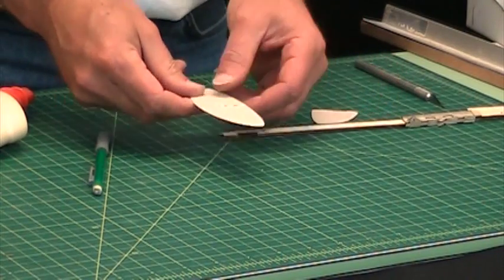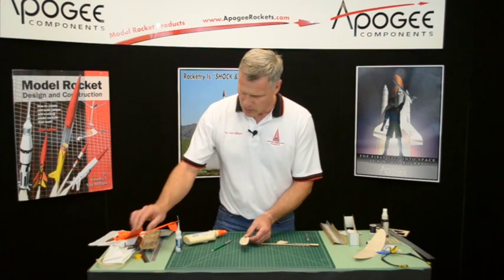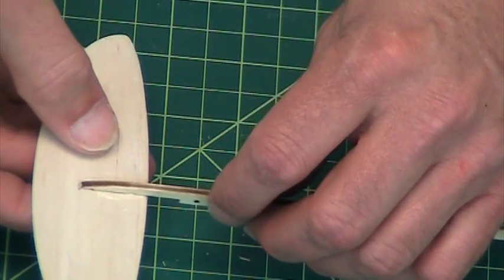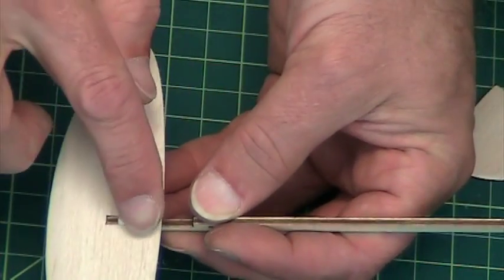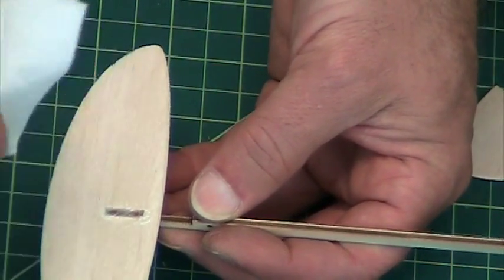I want to get a little glue in the tab. Any glue that comes out the back side, just go ahead and smear it around. That's fine.